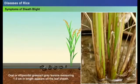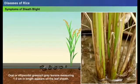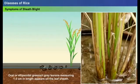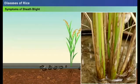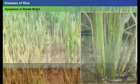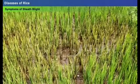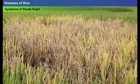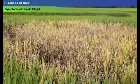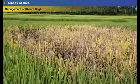Symptoms of sheath blight: initially, oval or ellipsoidal greenish-gray lesions measuring one to three centimeters in length appear on the leaf sheath close to the soil or stagnant water. Later the lesions enlarge, turning into grayish-white centers surrounded by dark brown margins. Gradually the lesions increase and spread to the upper part of the sheath and to the leaves, finally killing the entire plant.